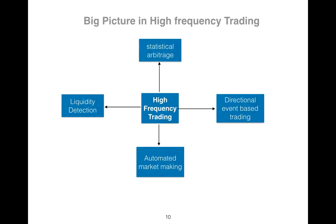Let's see the big picture in high-frequency trading. As you see, there are different modules. If you are a software architect or software engineer, you could use your statistical arbitrage model — for example, I use a Kalman filter to predict the future of the market. And simultaneously, you have automated market making — the order book, limit order book, market orders — and you provide liquidity, liquidity detection, and directional event-based trading.